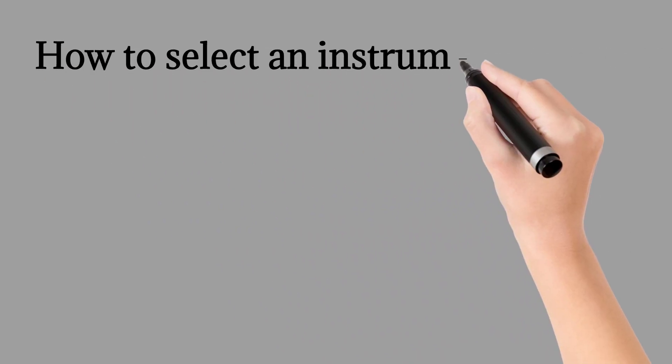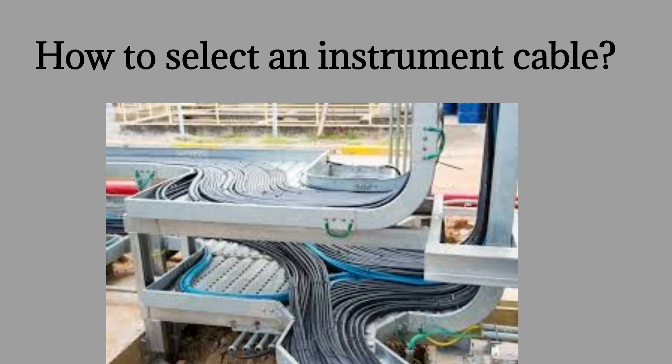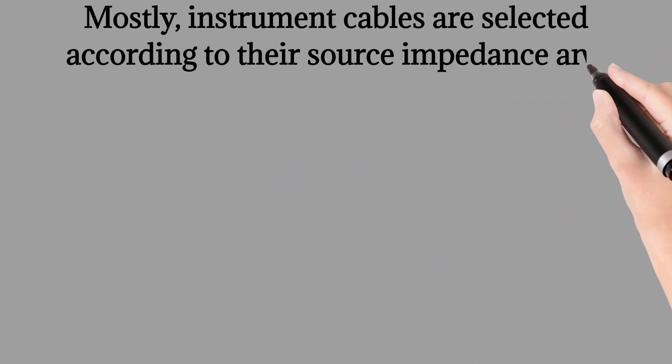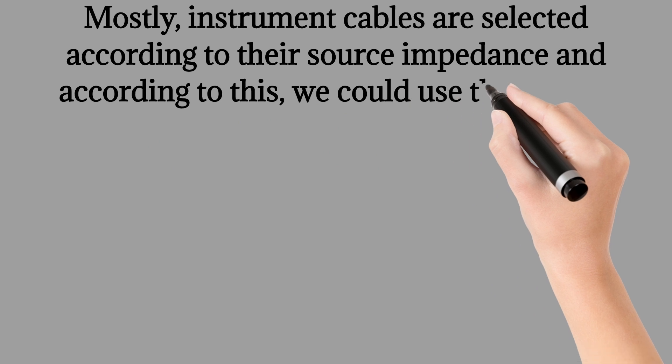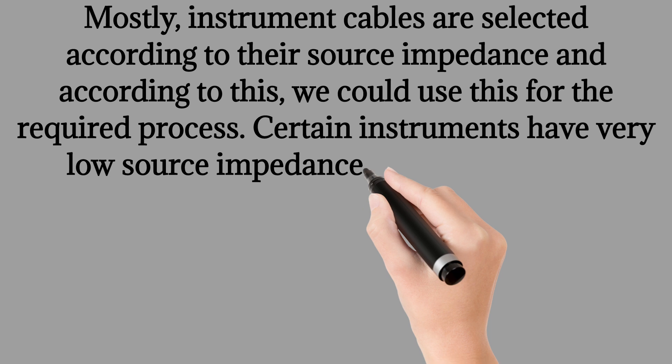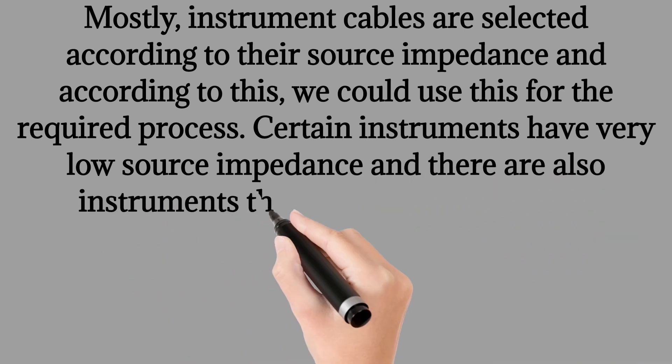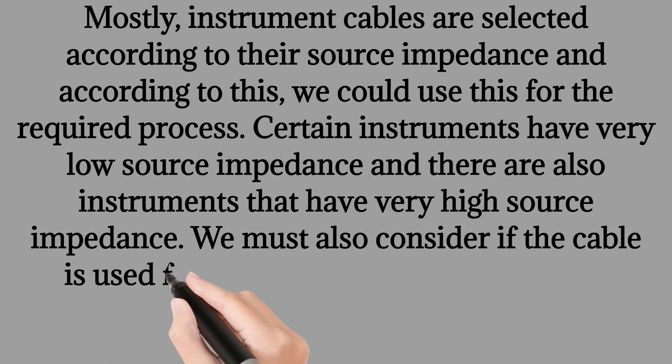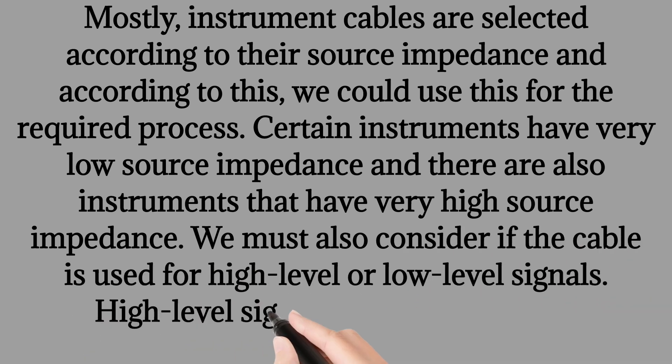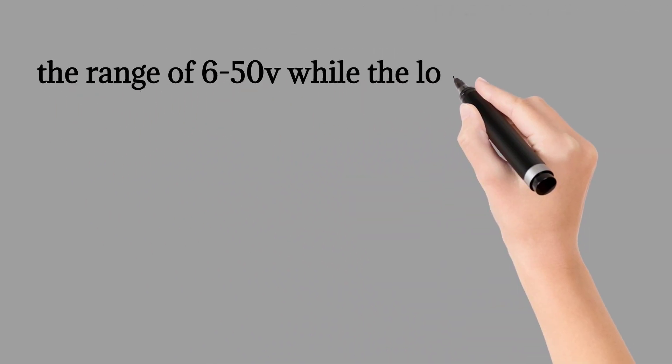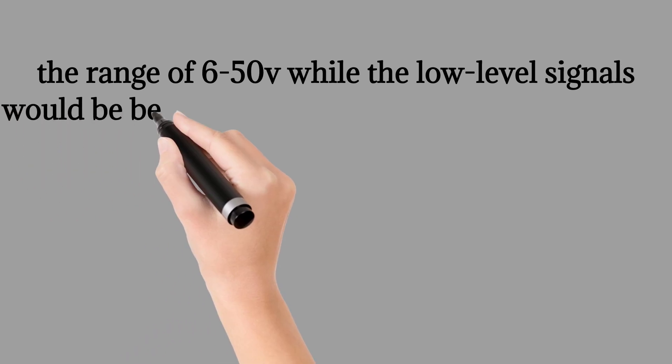How to select an instrument cable? Mostly instrument cables are selected according to their source impedance and according to this we could use this for the required process. Certain instruments have very low source impedance and there are also instruments that have very high source impedance. We must also consider if the cable is used for high level or low level signals. High level signals would be between the range of 6 to 50 V while the low level signals would be below 5 V.